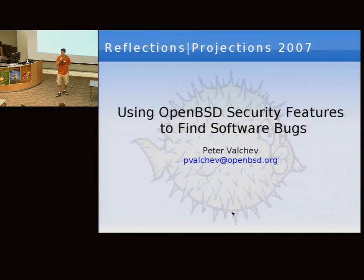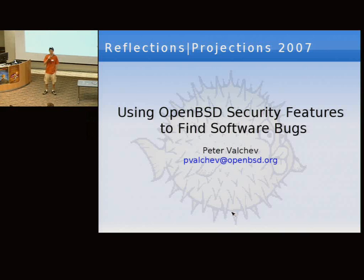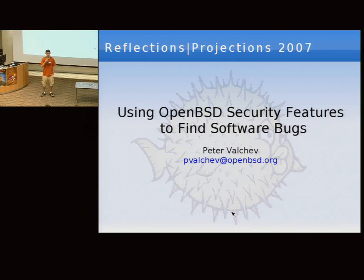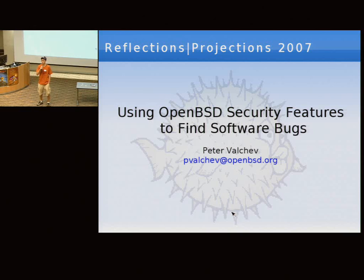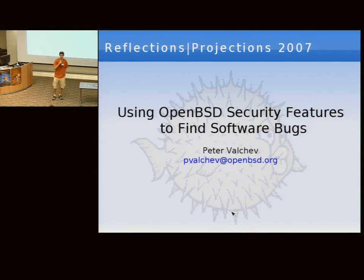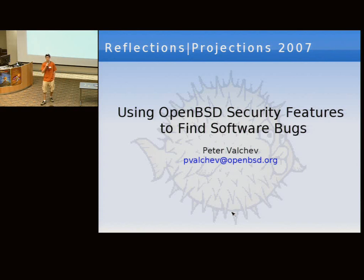We're going to start now. I hope you guys are not drowsy from the dinner. Today we have Peter Valchev from the Google security team, and he'll be talking about using OpenBSD to find security bugs. He's been an OpenBSD developer since 2001. Please welcome Peter.